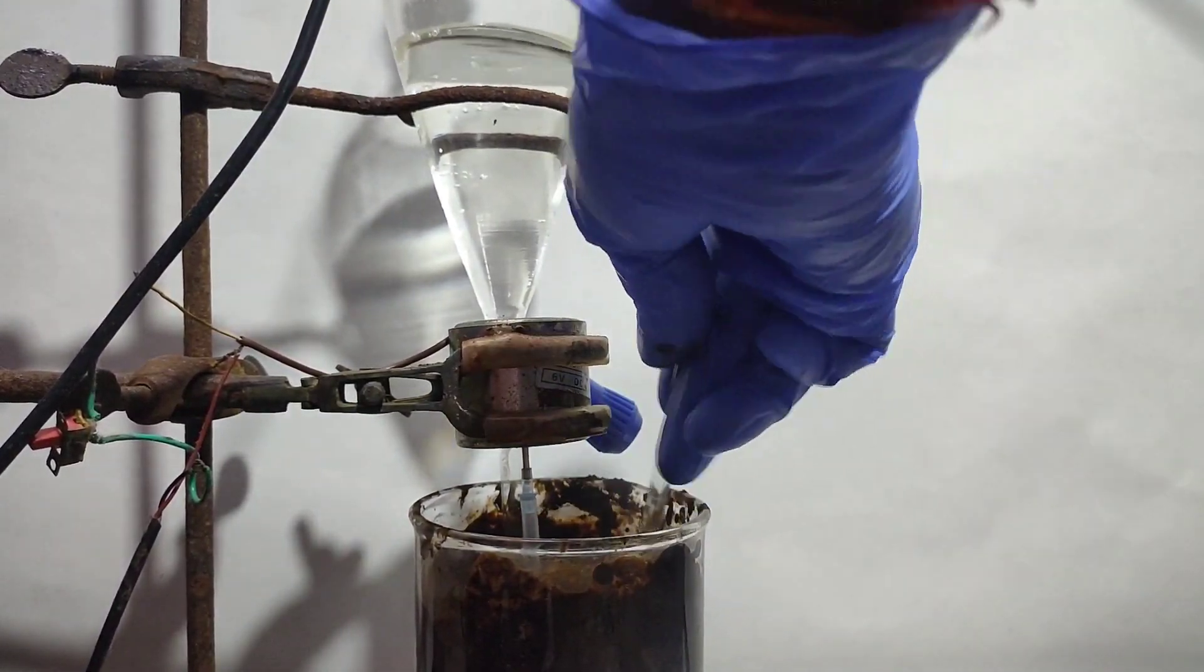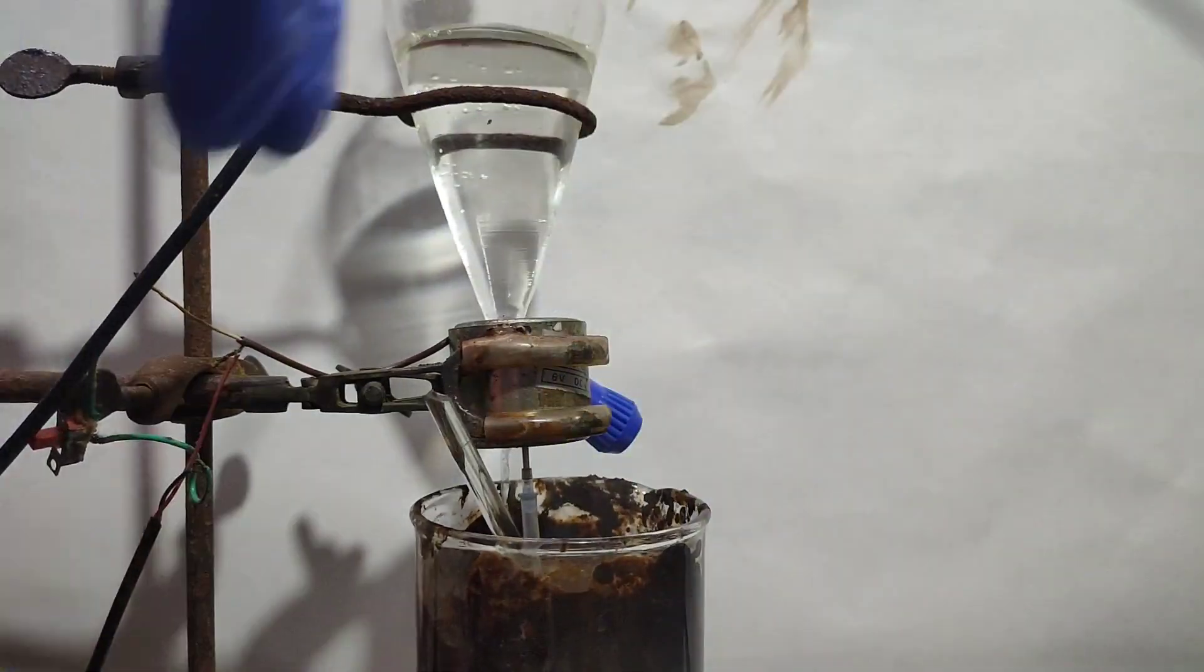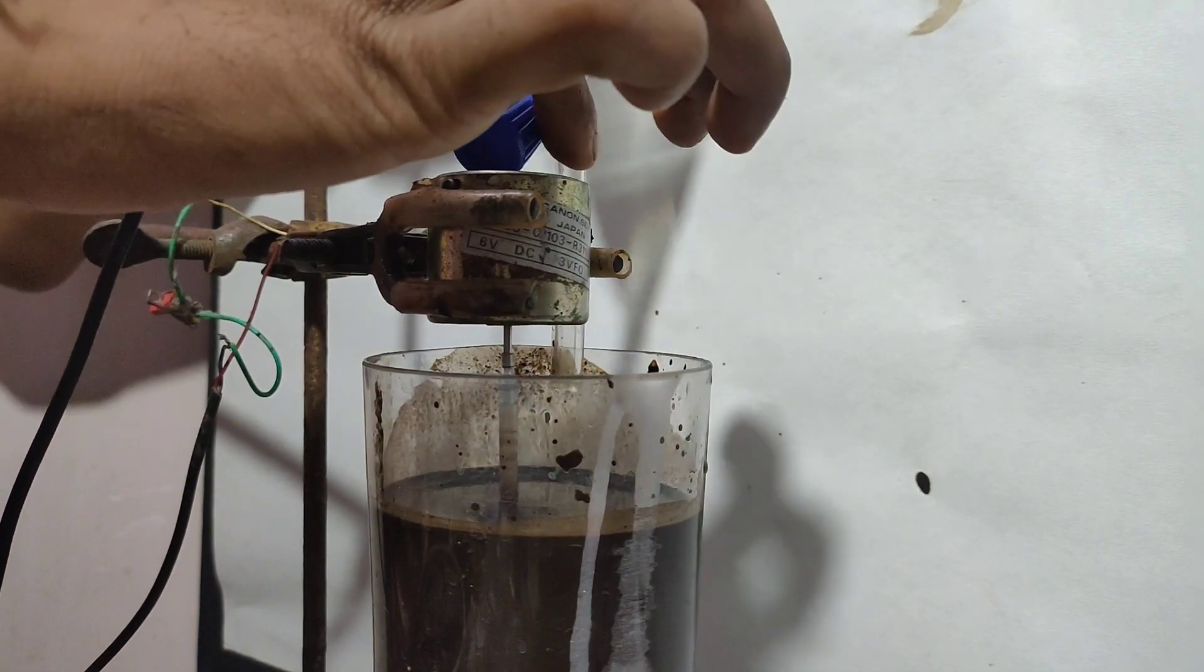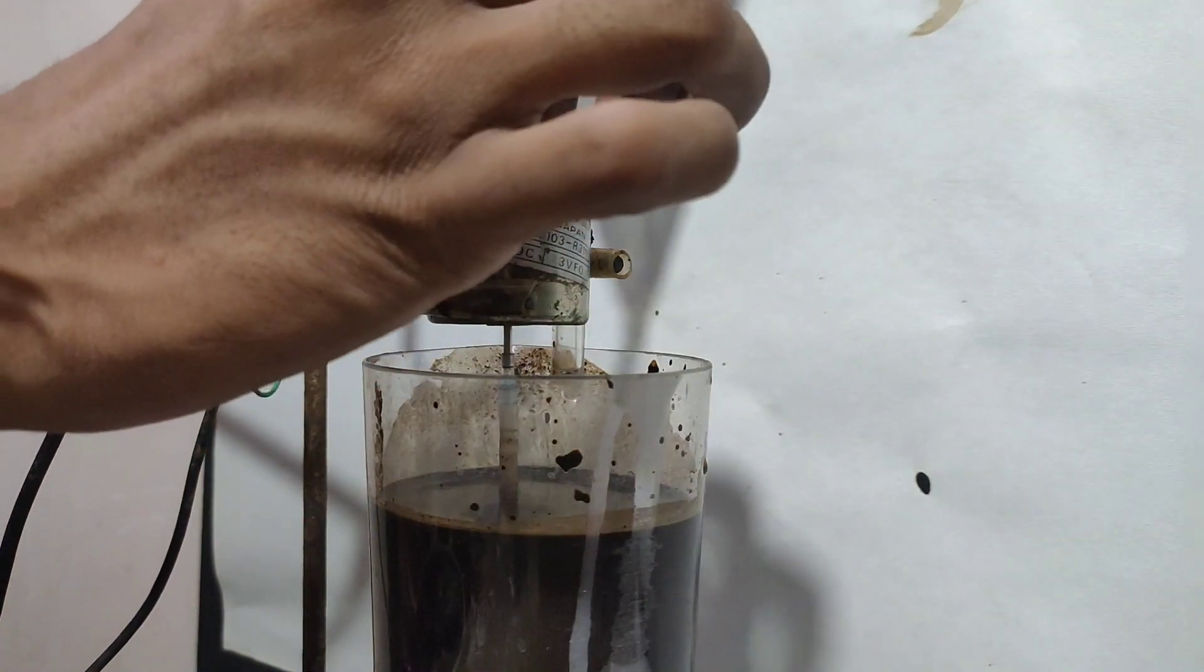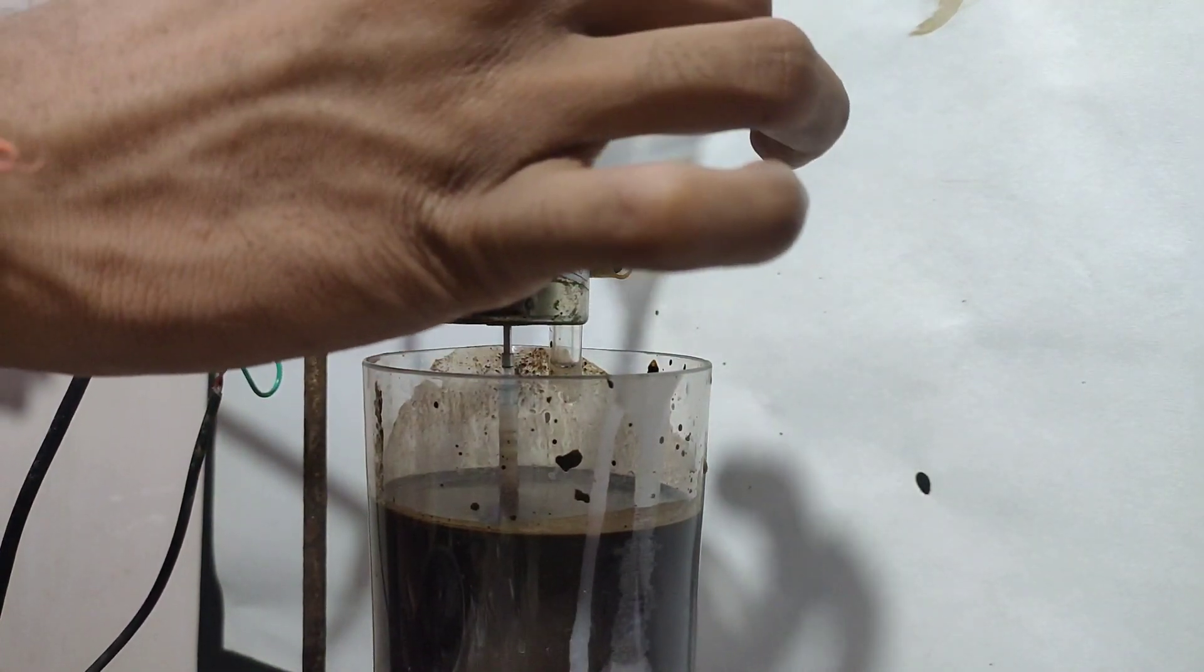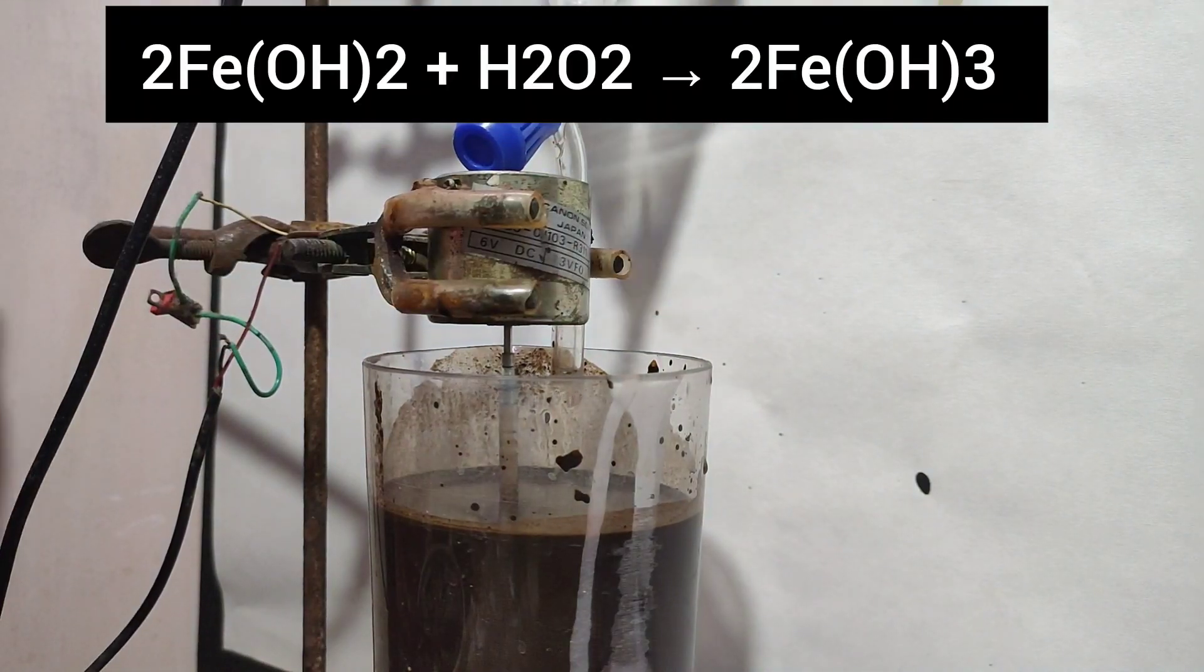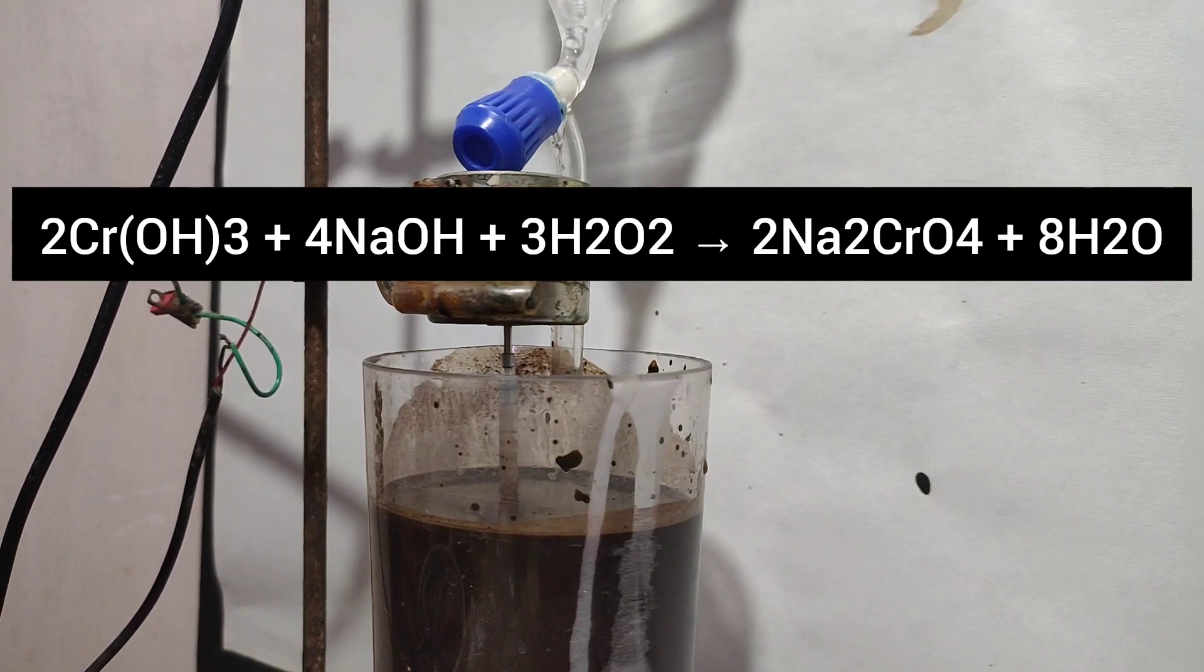As addition of hydrogen peroxide diluted the slurry, stirring became easier. Hydrogen peroxide is first used in the oxidation of ferrous hydroxide to ferric hydroxide. Then according to theory it should oxidize chromium hydroxide to sodium chromate. Here I added around 300 ml hydrogen peroxide.